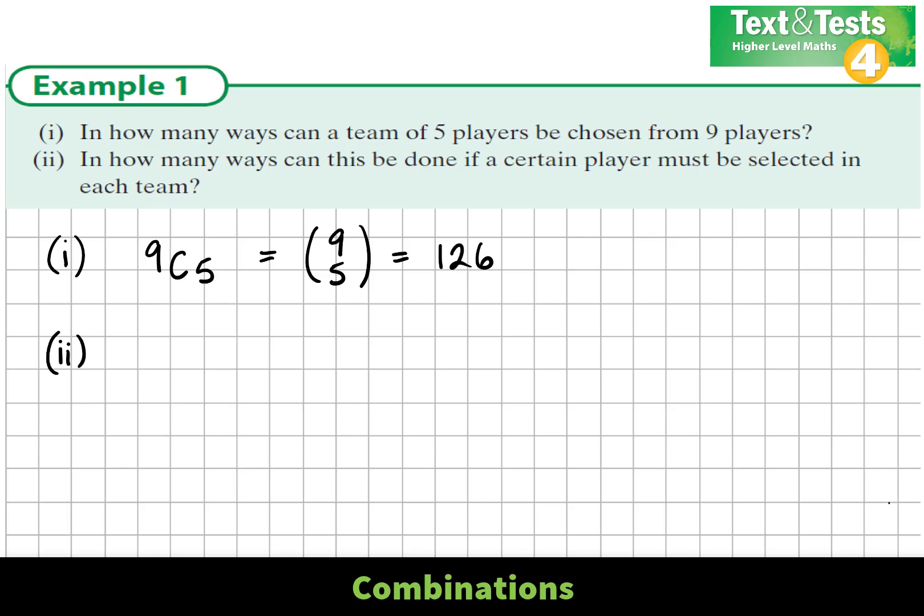Well, if a certain player has to be selected, I'm not really choosing 5 anymore from 9. That 1 has to happen. So what I have here is I have the 1 player. He's for certain. There's a 100% chance. Certainty, he happens.